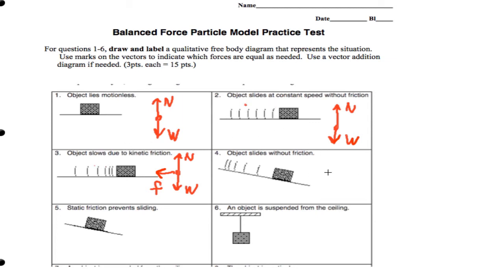Now, we have an object sliding without friction. We have a downward force of gravity. We have a normal force that goes perpendicular to the surface. And that's it.